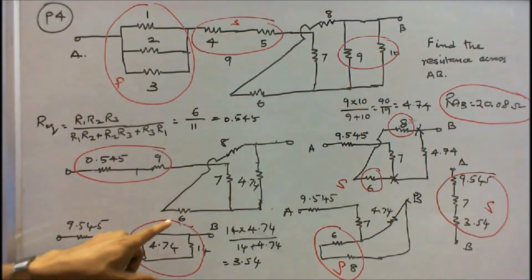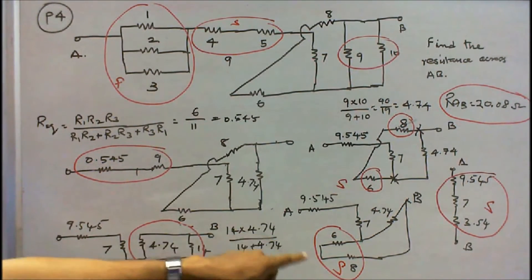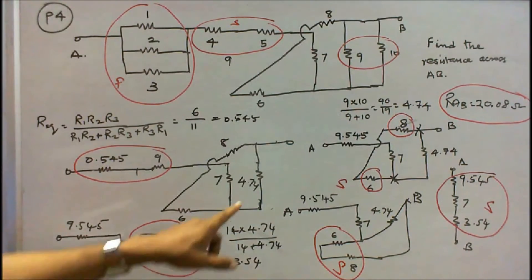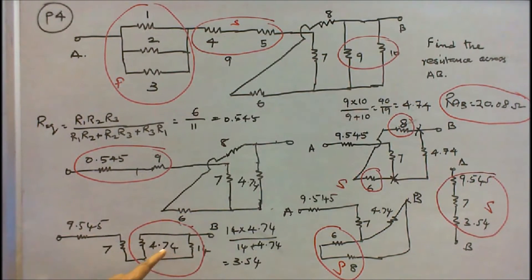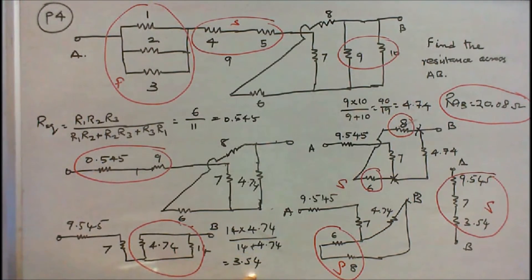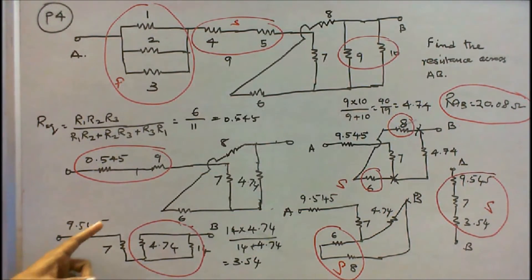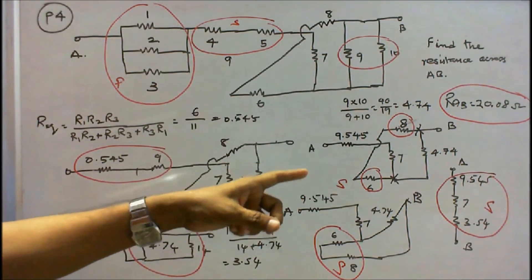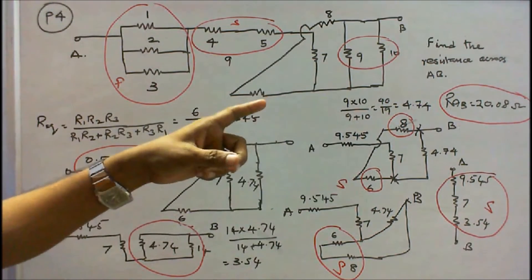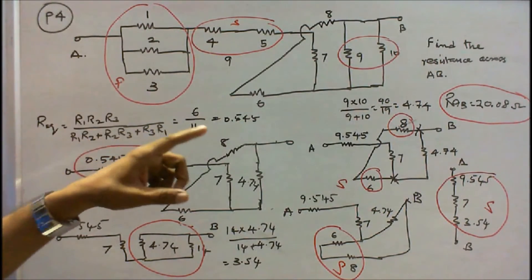Redrawing: 6Ω and 8Ω are in series = 14Ω. The 4.74Ω is in parallel with 14Ω: 14×4.74/(14+4.74) = 3.54Ω. Total resistance A-B = 0.545 + 7 + 3.54 = 20.08 + correction: 9.545 + 7 + 3.54 = 20.08Ω. The resistance across points A and B is 20.08Ω.